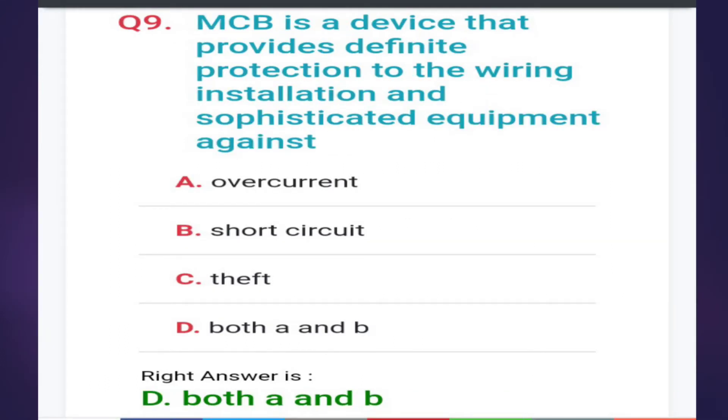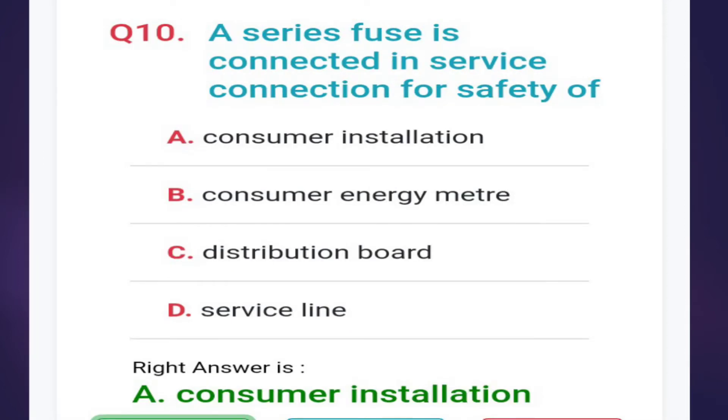Ninth: MCP is a device that provides definite protection to the wiring installation and sophisticated equipment against over current, short circuit, theft, or both A and B. Correct answer is option D, both A and B.